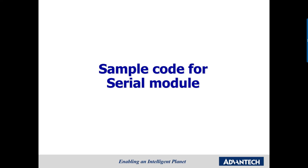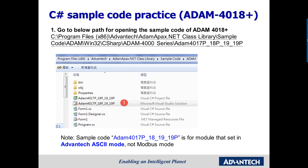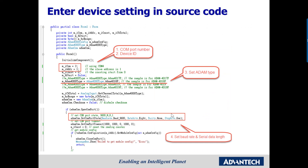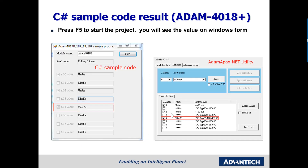Let's move on to the sample code for the serial module. Here we use the ADAN-4018-plus sample code as an example. Let's see how to use the sample code to connect to ADAN and get I/O values. First, go to the path shown below for opening the sample code for this module. In the Visual Studio IDE, double-click the Form 1 file on the right column. A Windows Form will pop out. Then right-click this part of the Windows Form to open the source code. Here we need to set several parameters to control ADAN: control number, device ID, module name, baud rate, and serial data length. After setting all parameters, users can run the project and see the values on the Windows Form. You will find that the status from the sample code will match with the ADAN utility.